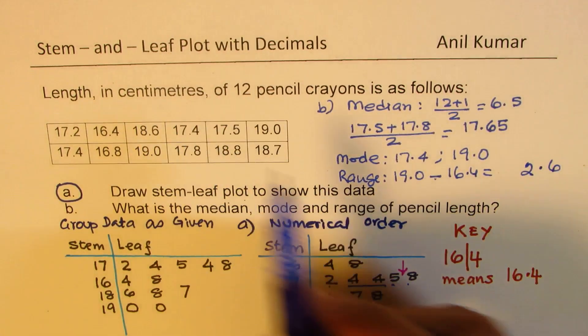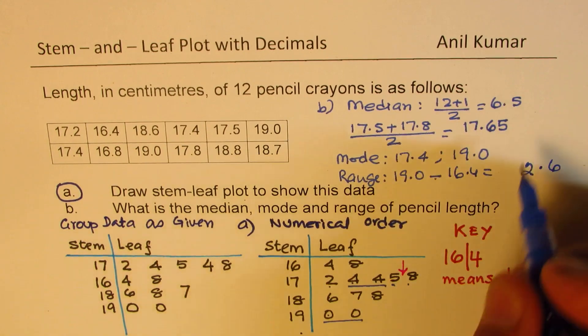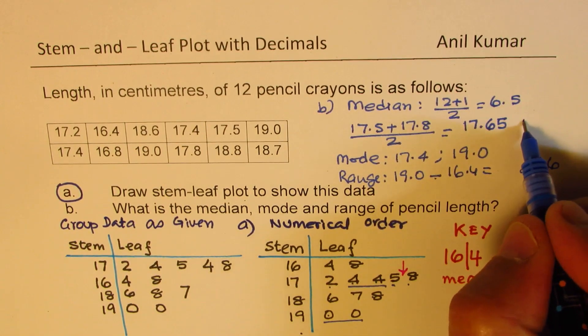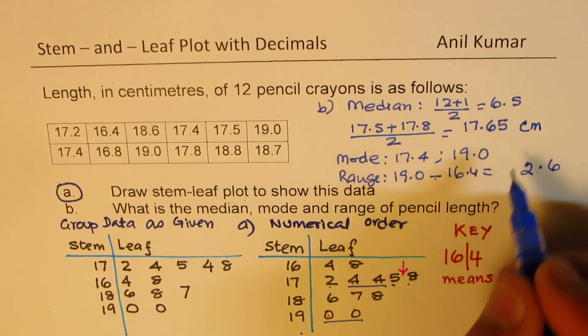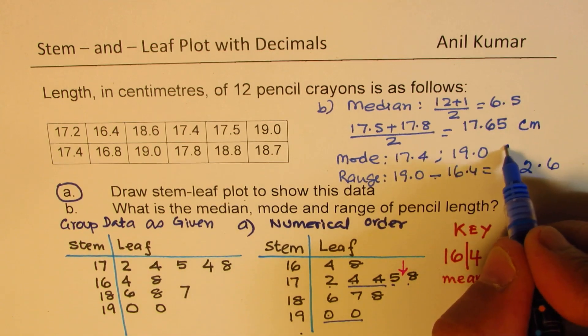And the units here will be in centimeters. So these are all in centimeters. So we get median of 17.65 centimeters, mode of 17.4 and 19.0 centimeters, and range of 2.6 centimeters.